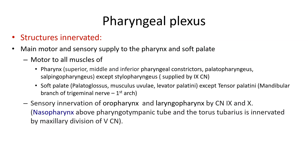Regarding sensory innervation, the pharyngeal plexus gives sensory supply to the oropharynx and laryngopharynx through the glossopharyngeal and vagus nerves. The nasopharynx, including the pharyngotympanic tube and torus tubarius, is innervated by the maxillary division of the trigeminal nerve. In summary, the plexus gives motor branches to pharyngeal and soft palate muscles, with the noted exceptions, and sensory supply to the oropharynx and laryngopharynx.